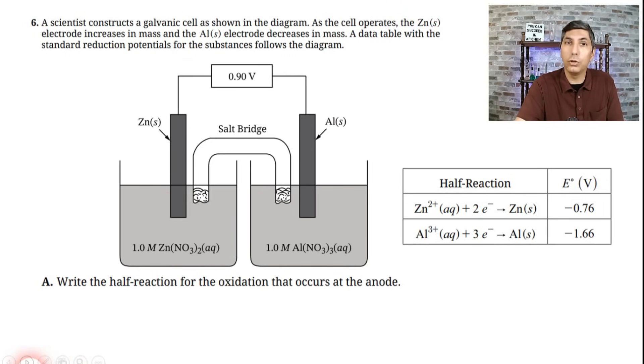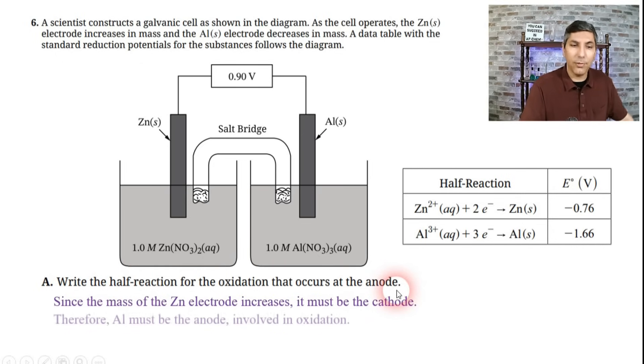How do we figure out which one is the anode and which one is the cathode? Notice that the aluminum electrode decreases in mass and the zinc electrode increases in mass. Well, whenever we have two metallic electrodes like this, the cathode is the one that increases in mass. The cat gets fat, as sometimes we say. So since the mass of the zinc electrode increases, that must be the cathode. Well, if zinc is the cathode, aluminum has to be the anode. Now it says write the half-reaction for the oxidation. If we look at how the aluminum half-reaction is written, this is the reduction, so we have to flip it around. Al yields Al³⁺ plus 3 electrons. Give yourself a point if you gave that as your answer for part A.